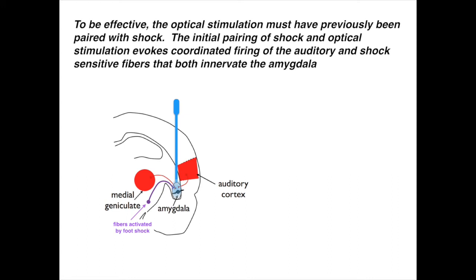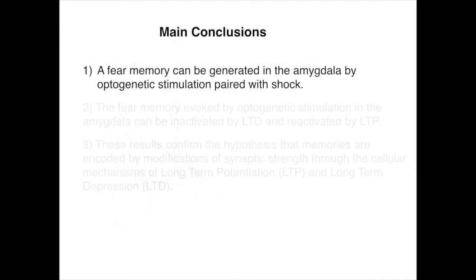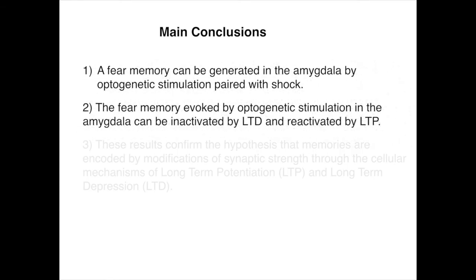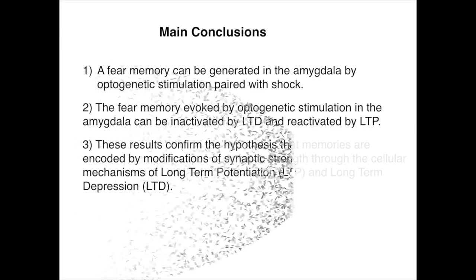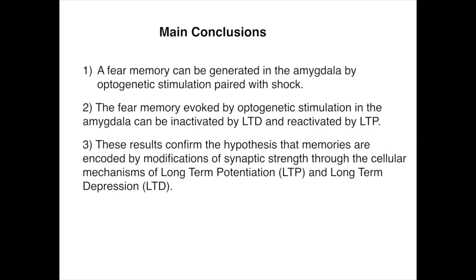The initial pairing of shock and optical stimulation evokes coordinated firing of the auditory and shock-sensitive fibers that both innervate the amygdala. So the main conclusions of this study are: first, a fear memory can be generated in the amygdala by optogenetic stimulation paired with shock; second, the fear memory evoked by optogenetic stimulation can be inactivated by long-term depression and reactivated by long-term potentiation; and third, these results confirm the hypothesis that memories are encoded by modifications of synaptic strength through the cellular mechanisms of long-term potentiation and long-term depression.